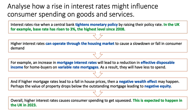Interest rates rise when the central bank, such as the Bank of England, tightens monetary policy — contractionary monetary policy — by raising their policy rate. The base rate is currently at 3%, as I'm recording this, the highest level since 2008. Higher interest rates can operate through the housing market to cause a slowdown or perhaps even a fall in real consumer demand. For example, an increase in mortgage interest rates — the cost of servicing a home loan — will lead to a reduction in effective disposable income for homebuyers on variable rate mortgages. Effective disposable income is income after tax and benefits, but also taking into account the cost of paying the mortgage. As a result, they will have less to spend, and therefore that will cause a fall in consumption.